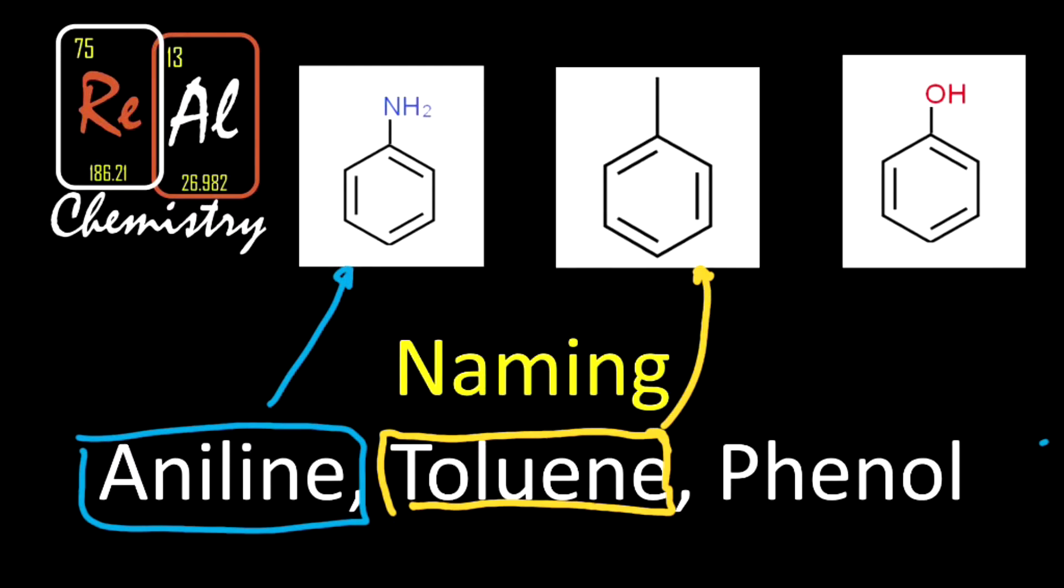It has a methyl group up top, so we haven't written the CH3 but you could. For whatever reason, this is the most commonly missed one. People will always call it methyl benzene. Never ever ever write methyl benzene - it's just wrong. You have to call it toluene.